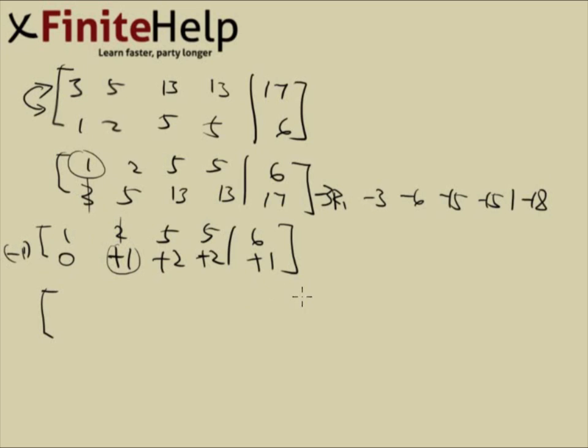And here, I'm going to get rid of the 2 by manipulating row 2, taking it times negative 2. So negative 2 times row 2, and I'm going to write that right next to row 1. Negative 2 times row 2 is going to be 0, negative 2, negative 4, negative 4, and negative 2. Add side by side, it's going to be 1, 0, 1, 1, and 4.